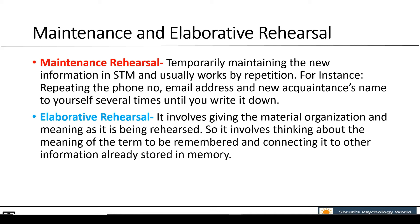Elaborative rehearsal involves giving the material organization and meaning as it is being rehearsed — you are going into a deeper level. It involves thinking about the meaning of the term and connecting it to other information already stored in memory. For example, if you have to remember a long string of numbers, you might associate them with dates that are personally significant, such as your birthday, your parents' wedding anniversary, and likewise. Perhaps you might see a pattern in the numbers — like they are going in ascending or descending order — so you can remember them quite easily. This process is effective because you can relate it to something meaningful, and it is easier to remember because it is connected to prior information.